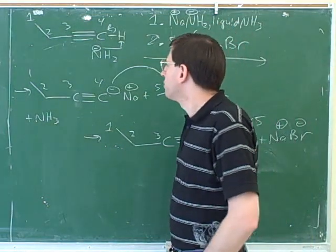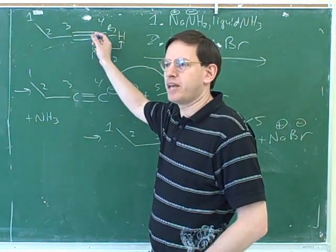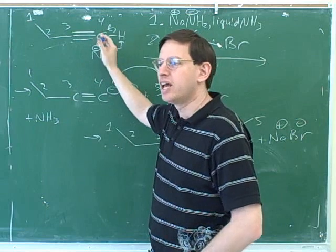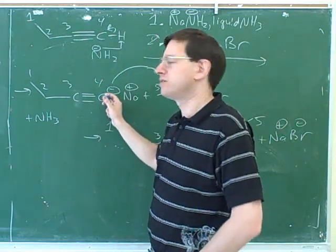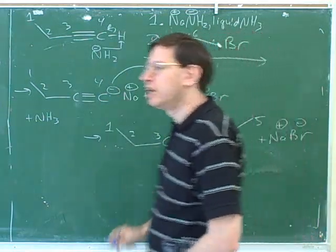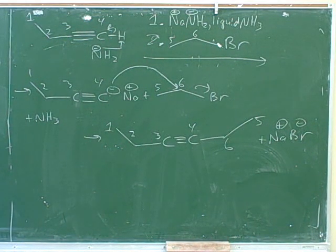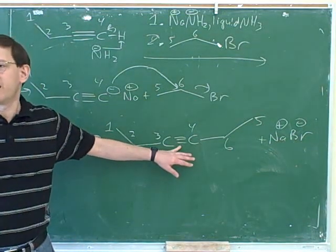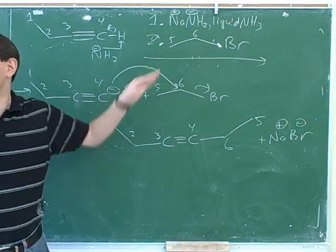What we learned is that you can deprotonate an alkyne with a strong base, although we would not expect this reaction to work with an alkene or an alkane. Why would you want to do that? To give yourself a good nucleophile that can do, for example, an SN2 reaction. Now we have another tool for lengthening carbon chains. If you're doing a synthesis problem and the product has a triple bond and more carbons than you started with, there's a very good chance you use this reaction.